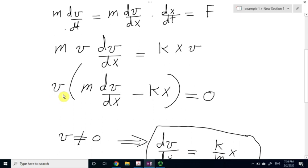But if you think about it, this case is not important for us, because we are given that the particle is moving with initial velocity v0, and v0 is not 0. So we know that the velocity will not be 0.